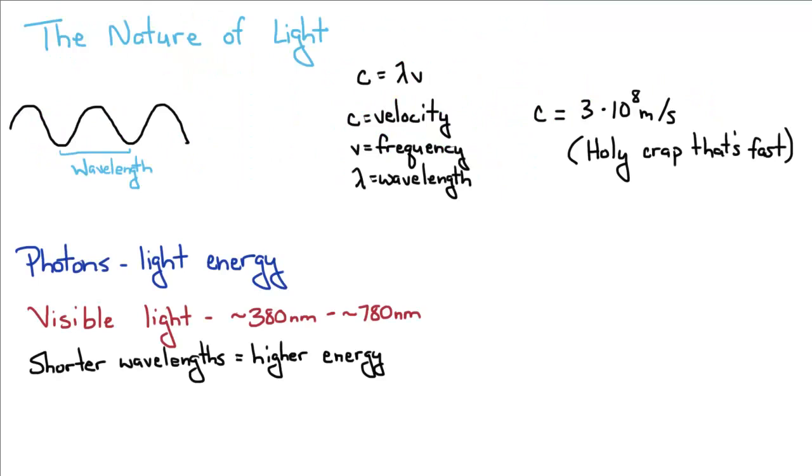So the nature of light. Light is a type of electromagnetic radiation. It travels as a wave. It's got short wavelengths or long wavelengths and it also behaves as a particle. Light energy comes in these little bundles called photons.